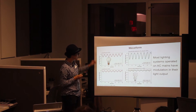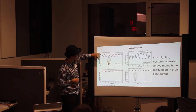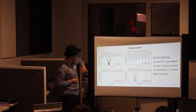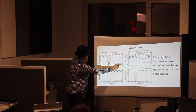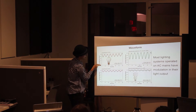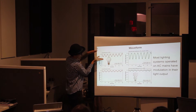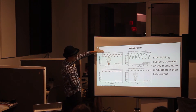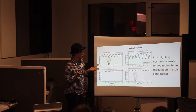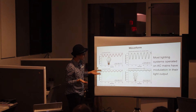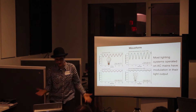The key thing to look at is the difference between the high point and the low point of the light output waveform. The smaller the difference between maximum and minimum light output, the less likely you are to notice flicker. The bigger the difference, the more likely you'll see it.